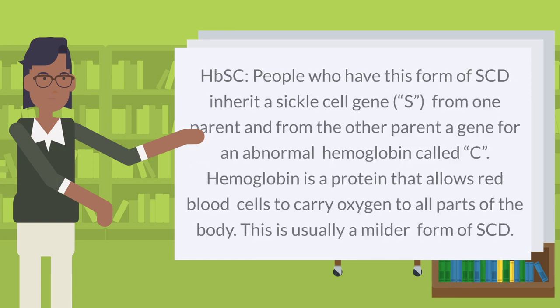HbSC: People who have this form of SCD inherit a sickle cell gene (S) from one parent and from the other parent a gene for an abnormal hemoglobin called C. Hemoglobin is a protein that allows red blood cells to carry oxygen to all parts of the body. This is usually a milder form of SCD.